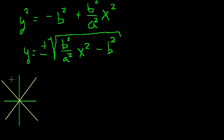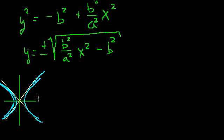As x approaches positive or negative infinity, the hyperbola gets closer and closer to the asymptotes — arbitrarily close, but it never touches them. The asymptote means it will get infinitely close as x gets infinitely large. So to figure out which way it opens, let's think about what happens as x becomes infinitely large.